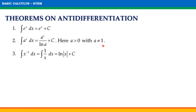For the third theorem, the indefinite integral of x raised to negative 1 with respect to x is equal to the indefinite integral of 1 over x with respect to x, which is equal to ln of absolute value of x plus c.